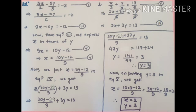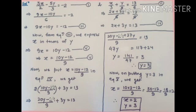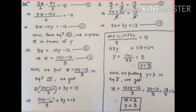From equation 3 we express x in terms of y: 9x equal to 10y minus 12, so x equal to (10y minus 12)/9 — this is equation 5. Substituting equation 5 into equation 4 and solving gives y equal to 3. Putting y equal to 3 back into equation 5 gives x equal to 2. So finally, x equal to 2 and y equal to 3.